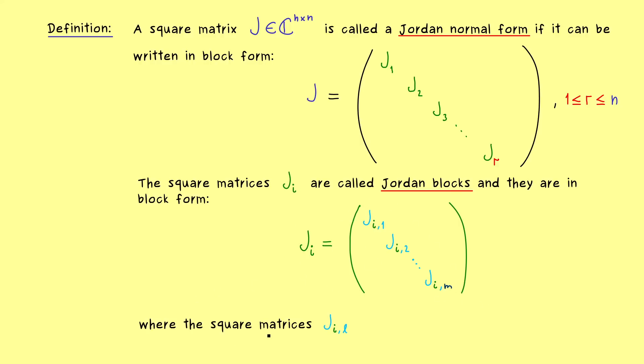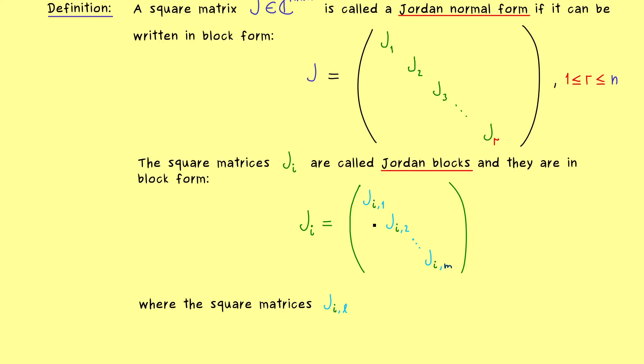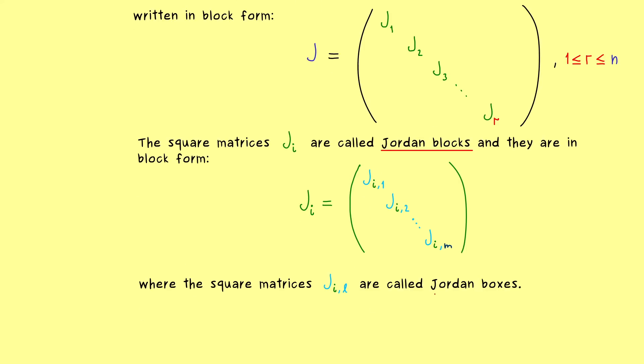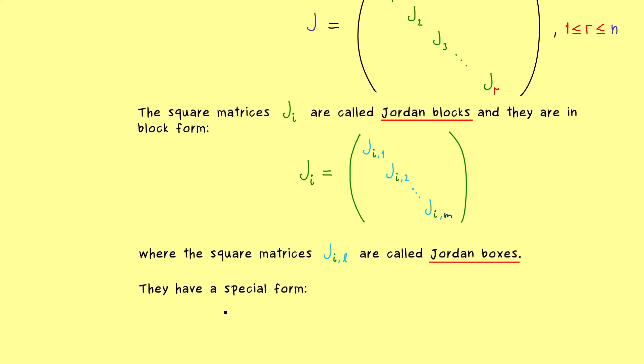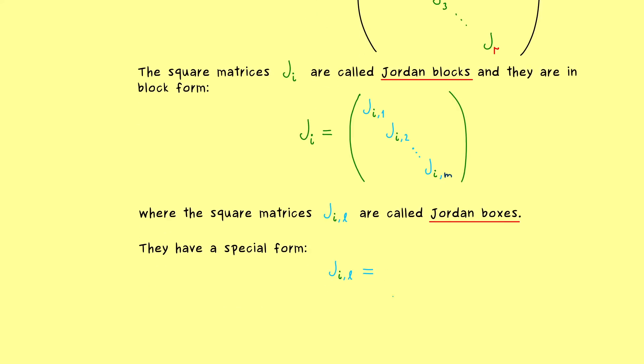So now since we have square matrices inside the Jordan blocks, we also need a name for these. And here we will call them Jordan boxes. So now you can remember a Jordan normal form consists of Jordan blocks and these consist of Jordan boxes. And now finally these Jordan boxes have a special form as we have seen it in our first example before. Namely they have a given eigenvalue on the diagonal and let's call it lambda_i. So this means inside a given big Jordan block we always have the same eigenvalue lambda_i.